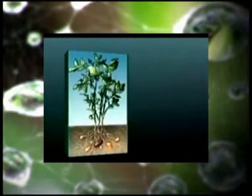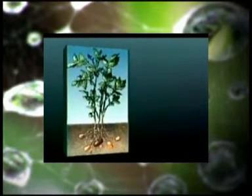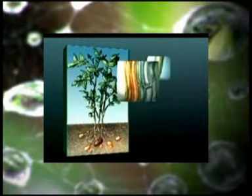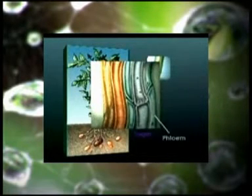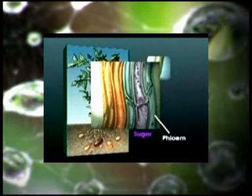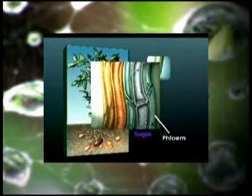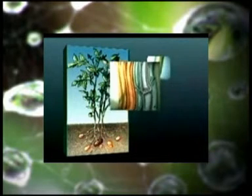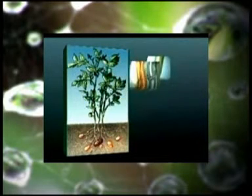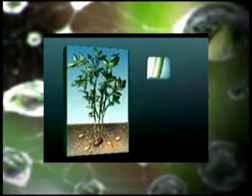Di samping itu, bersama dengan mineral yang diserap tanaman melalui akar, gula dan mineral ini membuat senyawa-senyawa yang penting seperti protein dan vitamin yang memberi nutrisi kepada tanaman. Jadi, fotosintesis menghasilkan energi dan nutrisi yang dibutuhkan untuk semua makhluk hidup.